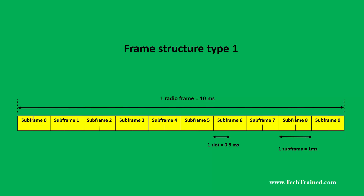I wanted to record this short video to explain the difference between two types of radio frames. One is for Frequency Division Duplexing (FDD) and the other is for Time Division Duplexing (TDD). The radio frame used for FDD is termed Frame Type 1, and the one used for TDD is termed Frame Structure Type 2.